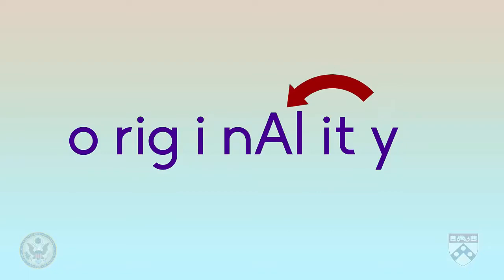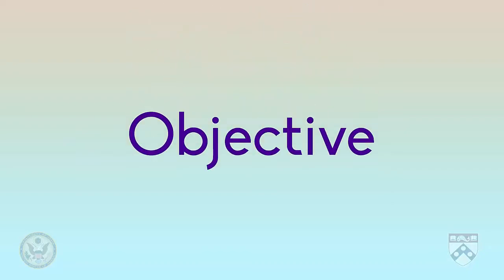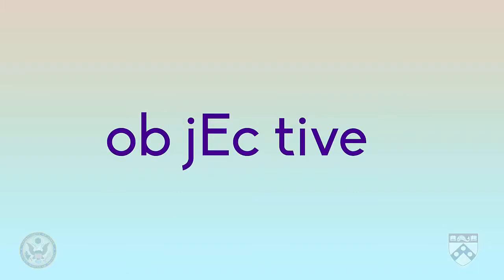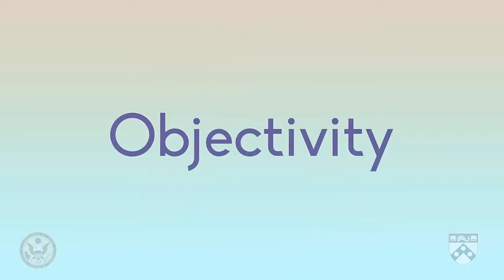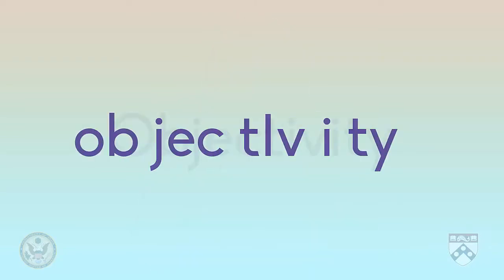Let's look at one final example. Let's take the word objective. How many syllables does this word have? Objective — three. Can you hear which syllable is stressed? Objective — it's the second syllable. Now let's change the word form using the word ending I-T-Y. How many syllables does the word objectivity have? Objectivity — five. Which syllable has the stress? Objectivity — it's the third syllable.